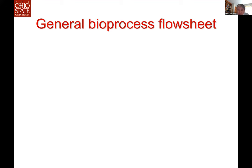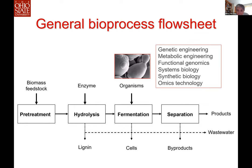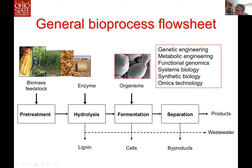Going back to the general bioprocess flow sheet, we need to use different microorganisms for fermentation. A number of high-tech approaches like genetic engineering, metabolic engineering, functional genomics, systems biology, synthetic biology, and omics technology are used in the research. The feedstock ranges from starch to sugarcane to biomass like wood chip and stover or corn stover. In my talk, I will focus on fermentation and engineering microorganisms to facilitate the bioconversion, and briefly on separation and integration of the process.